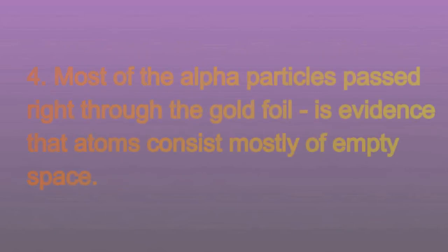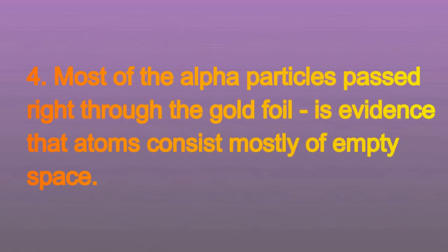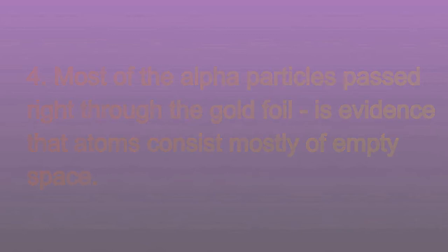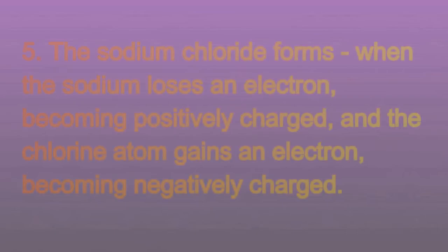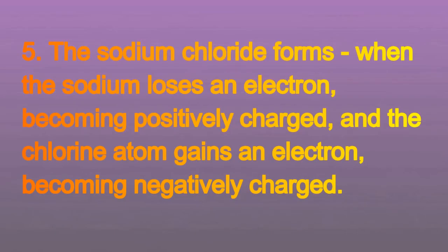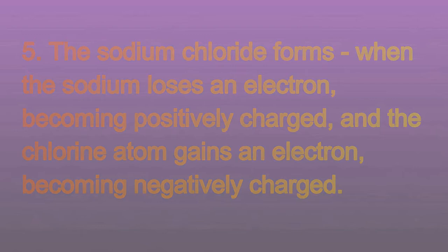Four: Most of the alpha particles passing right through the gold foil is evidence that atoms consist mostly of empty space. Five: Sodium chloride forms when the sodium atom loses an electron, becoming positively charged, and the chlorine atom gains an electron, becoming negatively charged.